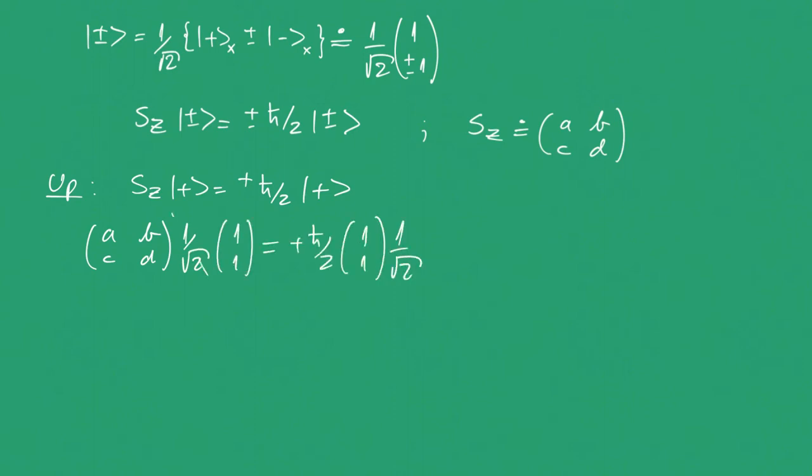These terms cancel out. If we multiply here, we end up with A plus B equal to h-bar over 2, C plus D equal to h-bar over 2.